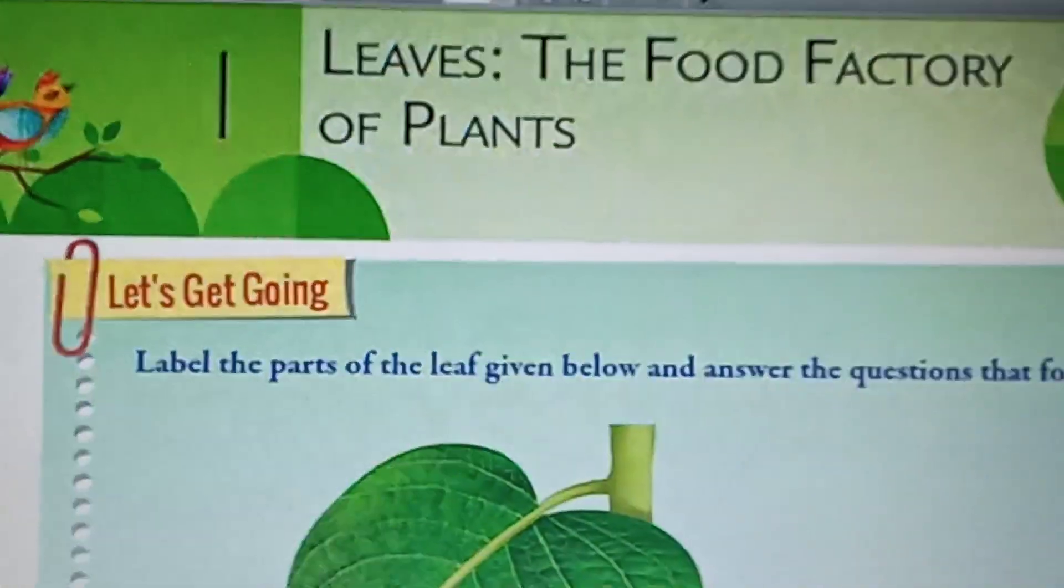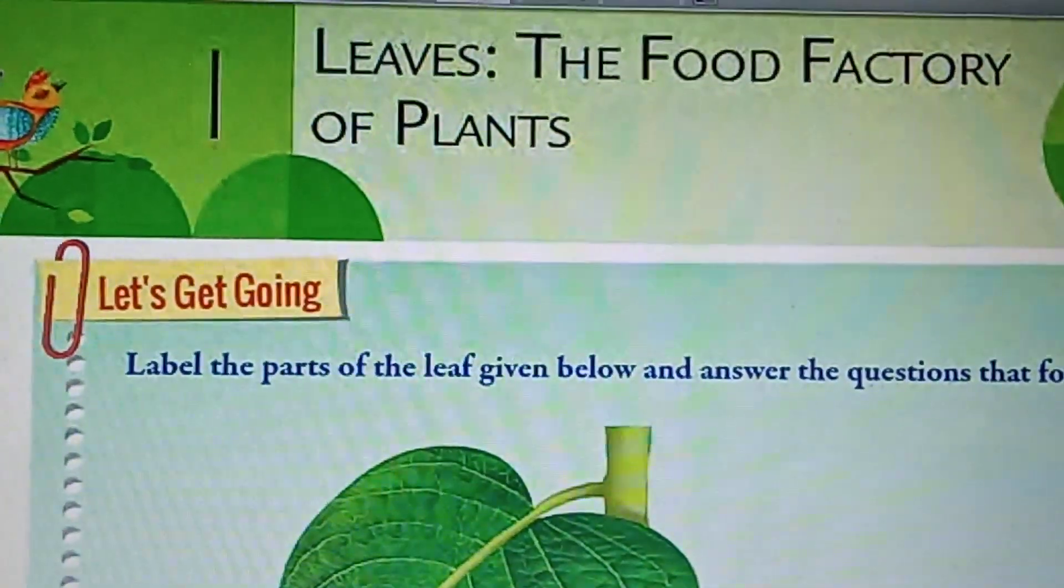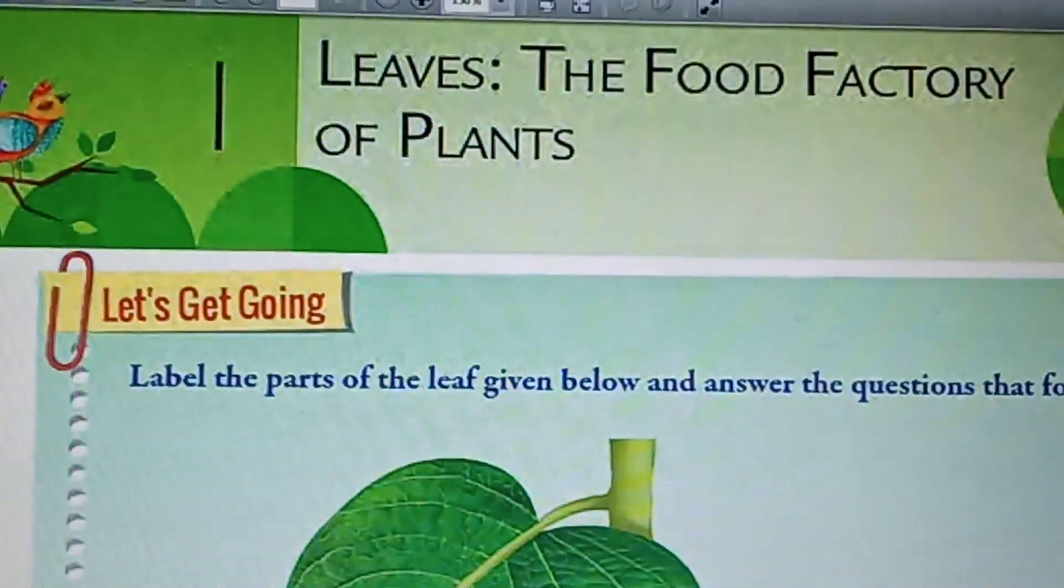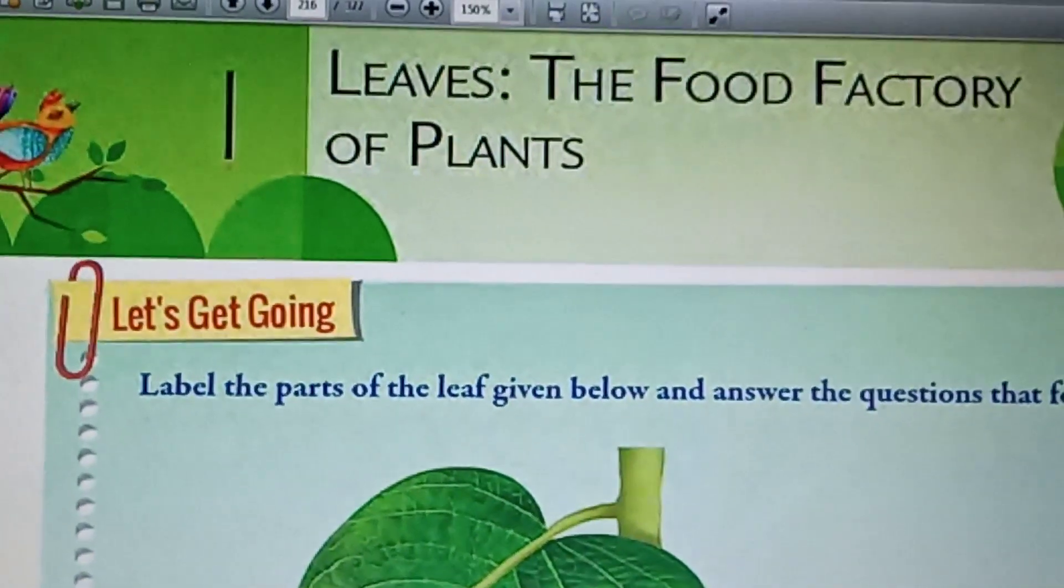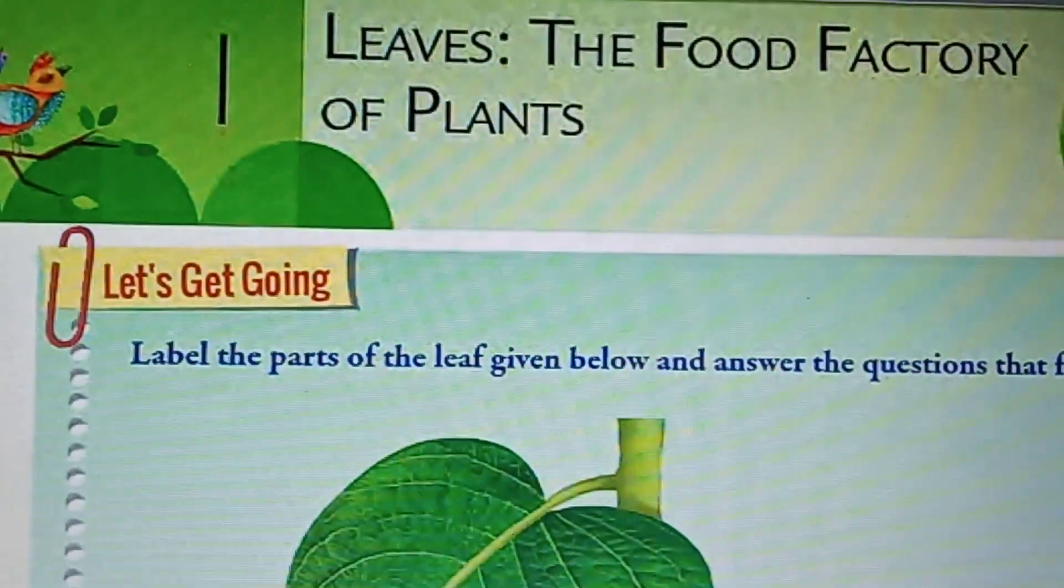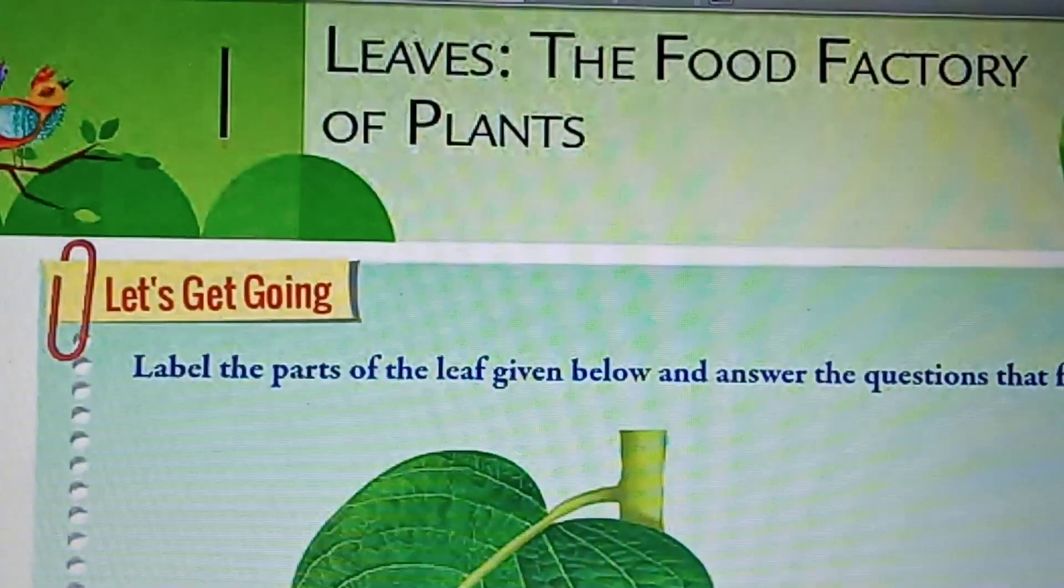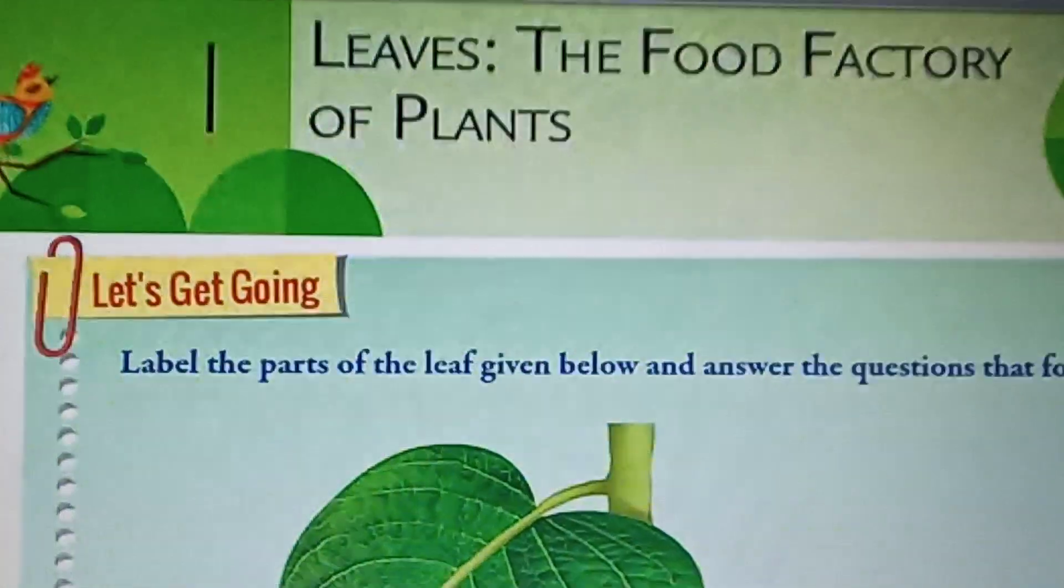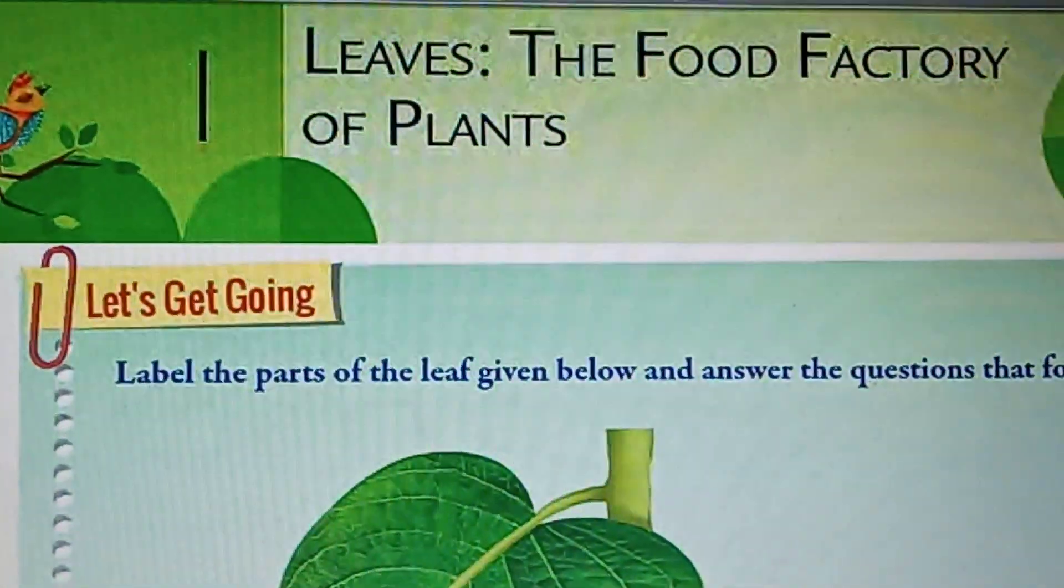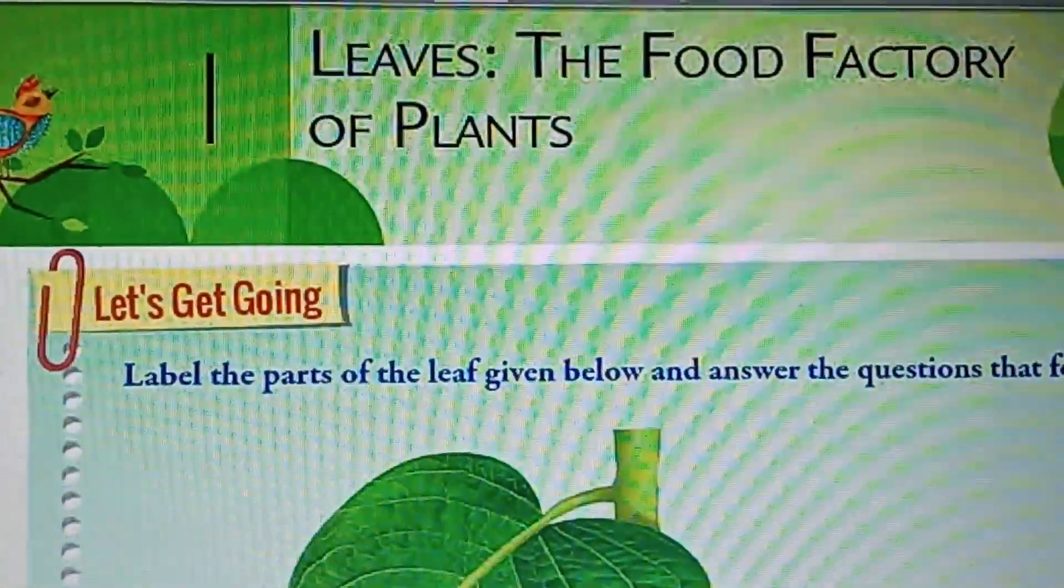Good morning students. I hope all of you are fine and enjoying your home assignments of different subjects. I think all of you have downloaded the book for class 4, semester 1. Today I am going to explain the first chapter of science. The name of the chapter is Leaves, the Food Factory of Plants.